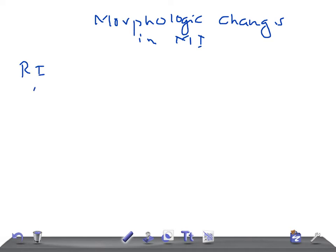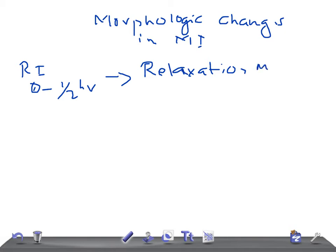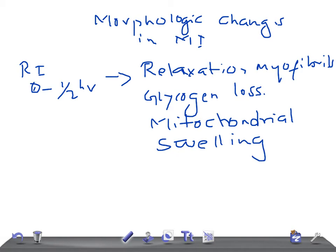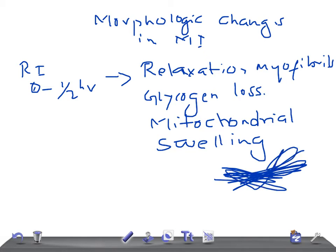With reversible injury — from zero to half an hour — the gross features show nothing in the heart. On light microscopy, you don't see anything either. However, electron microscopy shows relaxation of myofibrils, glycogen loss, and mitochondrial swelling. These are the reversible changes seen under electron microscopy, not light microscopy.